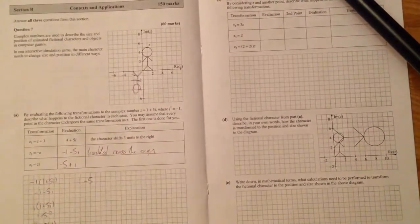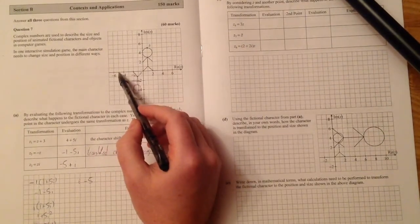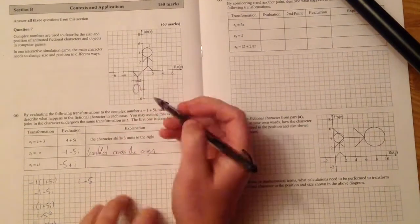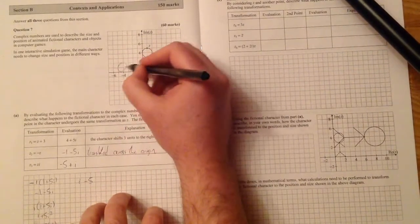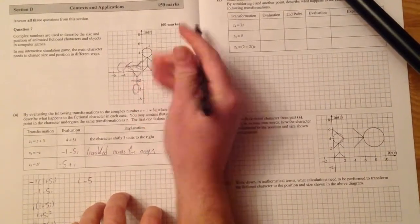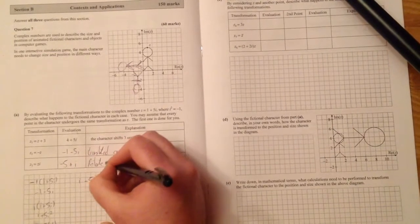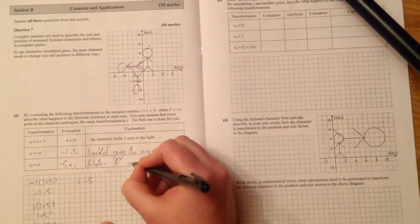And then it says minus 5 plus i. So let's have a look. Minus 5 is here. Plus i is going to be here. So our character is kind of going to be lying sideways. So he's actually rotated 90 degrees anticlockwise. So rotates 90 degrees anticlockwise.